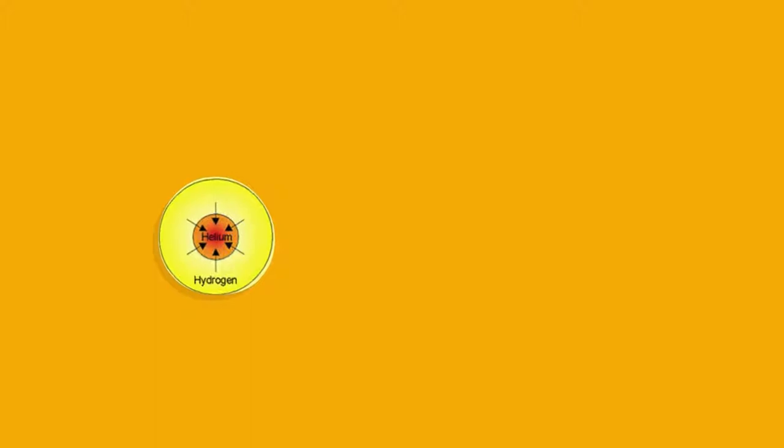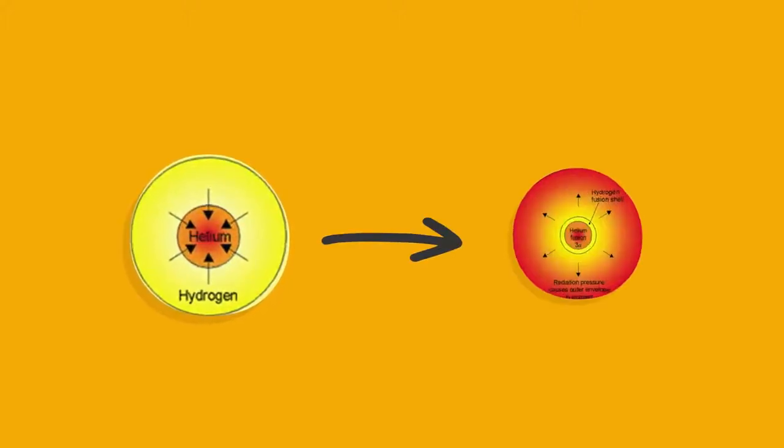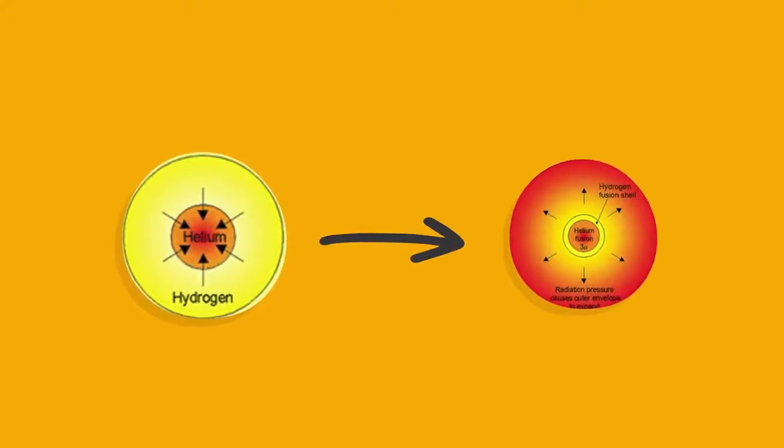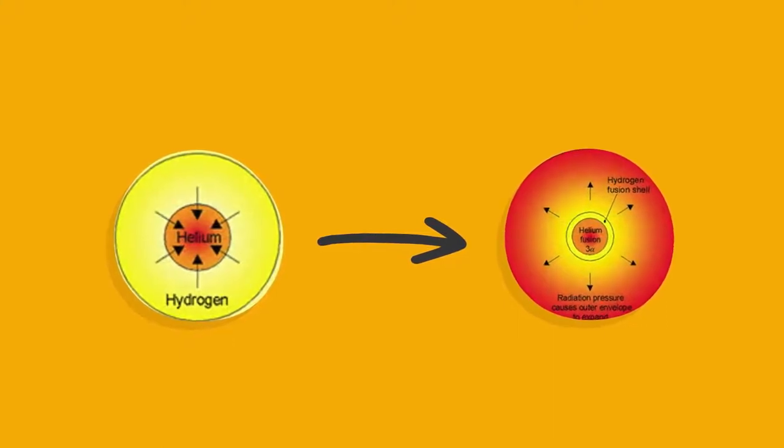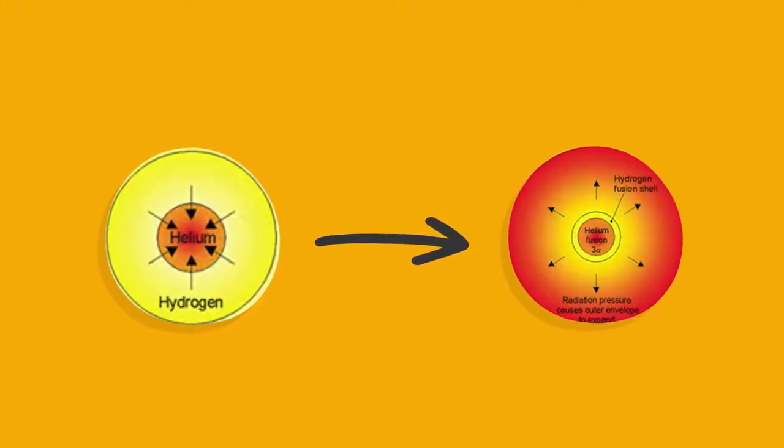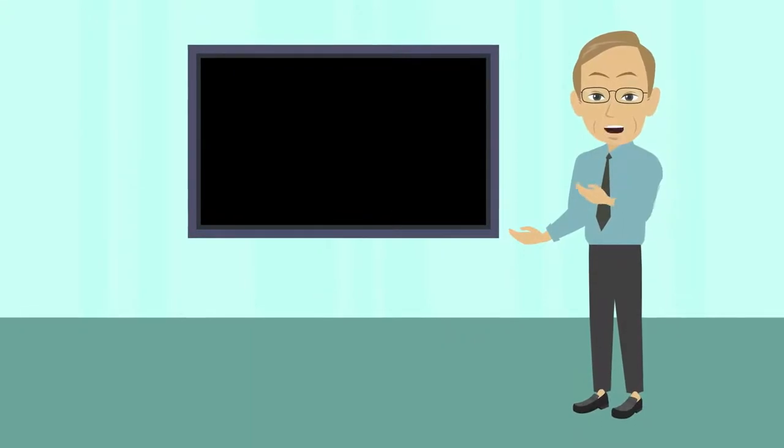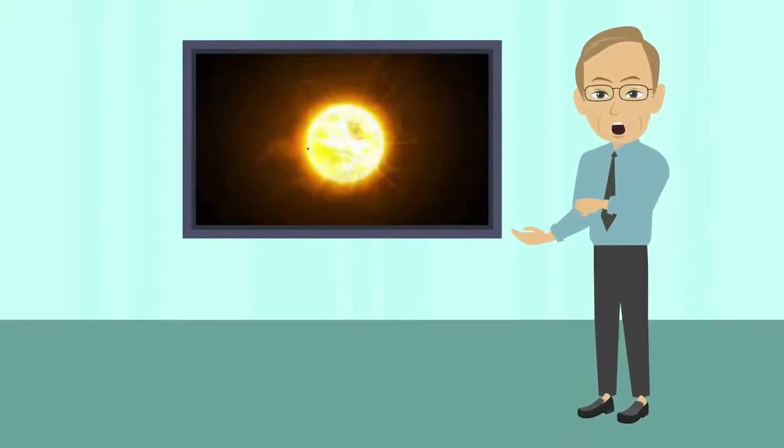That helium core will start to collapse in on itself. When it does, it releases energy, though not through fusion. Rather, it merely heats up because of greater pressure. That release of energy brings in more light and heat, making the Sun even brighter.